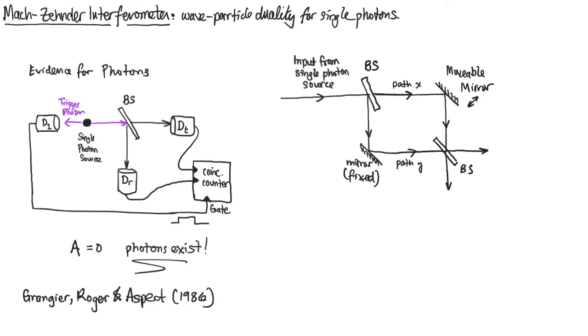And now we have two different outputs. So we're going to label the two paths, path X and path Y. And we'll have two detectors, detector Y and detector X. And those signals go off somewhere to be measured.